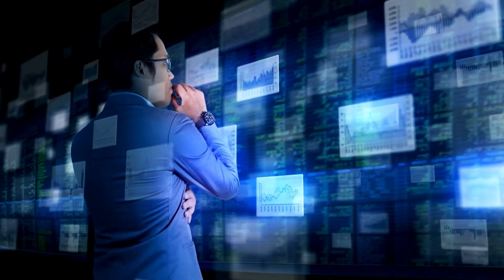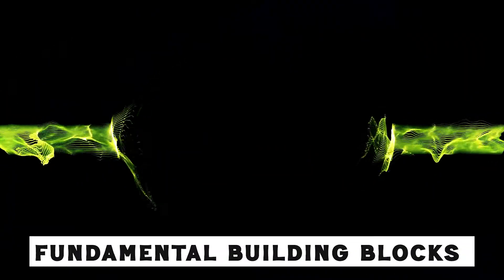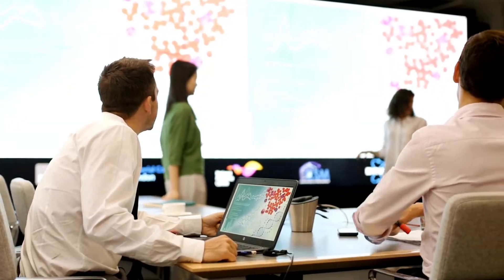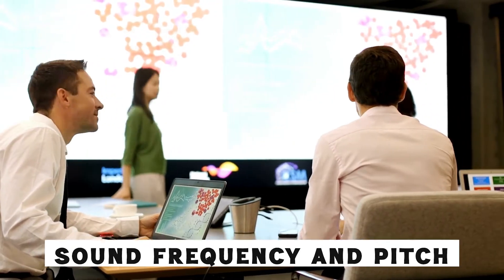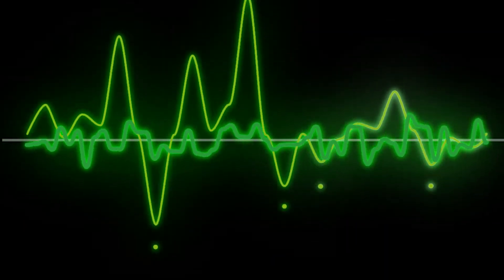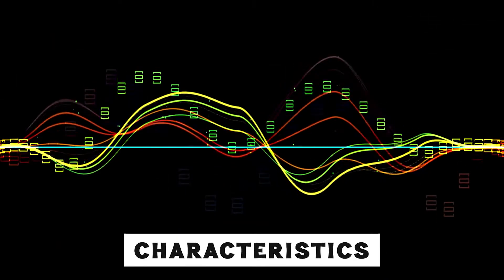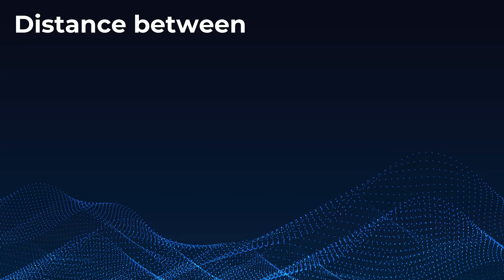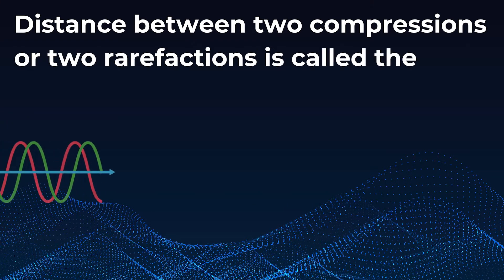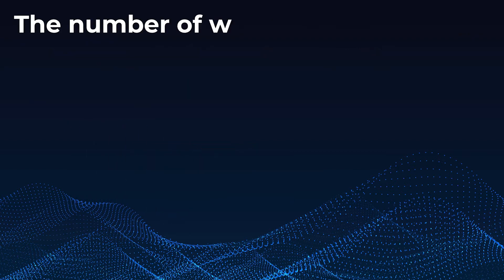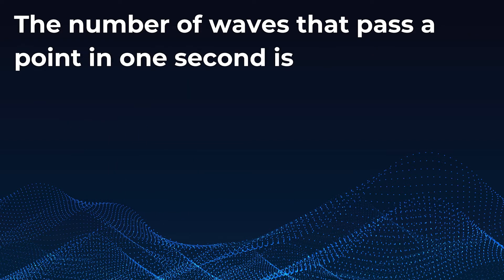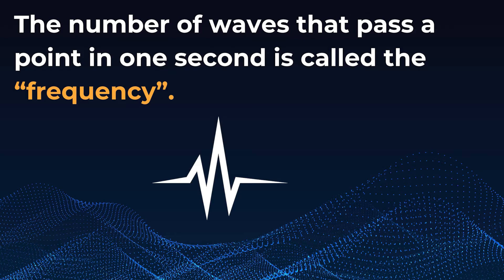The concepts of compression and rarefaction are the fundamental building blocks of sound waves. Now let's explain sound frequency and pitch. The distance between two compressions or two rarefactions is called the wavelength. The number of waves that pass a point in one second is called the frequency. The frequency determines the pitch of the sound - how high or low it sounds.